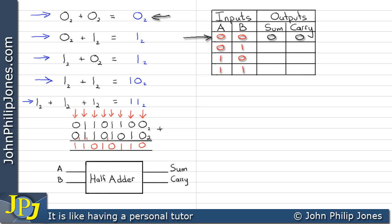When A is zero and B is zero, the result is zero — giving us a sum of zero and a carry of zero. When implementing with gates, no carry must be represented as zero. The next combination is zero and one: that gives us a sum of one and no carry. Similarly, one plus zero gives a sum of one and no carry.